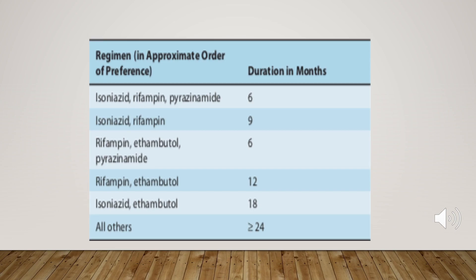As you can see from this diagram, we have different regimens to treat mycobacterial tuberculosis. Sometimes we have three agents — like isoniazid, or isoniazid with rifampicin, or rifampicin with ethambutol — with different combinations. Pay attention to the duration of treatment: six months, nine months, or twelve months.